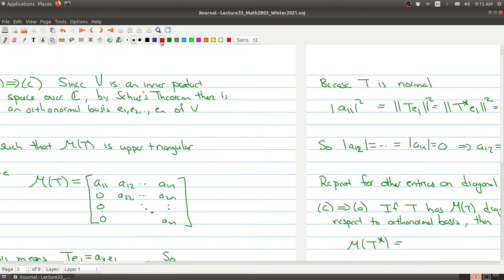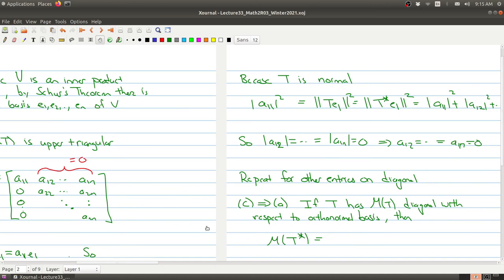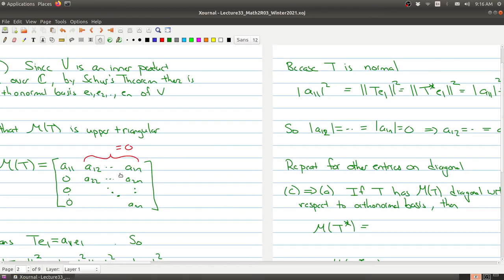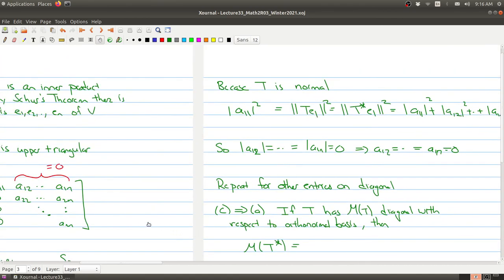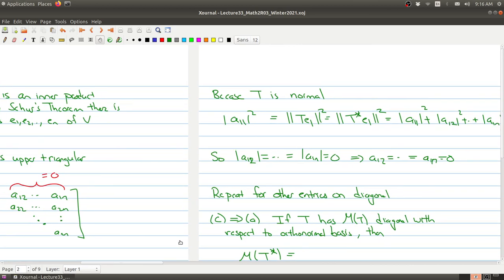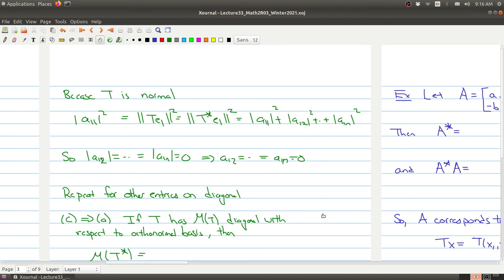And now we know that we have a zero here and we only have A22 in this column. And now we repeat the argument on the next column. So we repeat for the other entries on the diagonal. So then we would show the next clump over here off of the diagonal is zero. And then we show the next clump after that is zero. So at the end of the day, you're just going to be left with the diagonal entries. So that with respect to this particular basis, you get a diagonal matrix. We have to prove one more part, the reverse implication that C implies A, but we'll do that after the break.